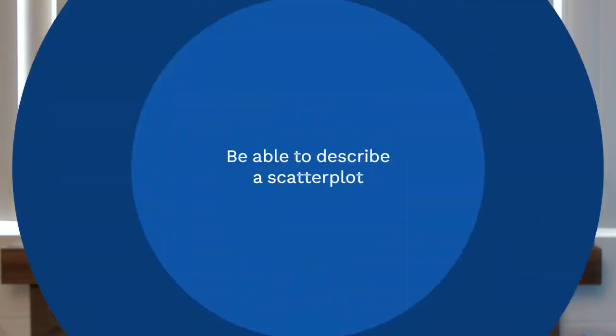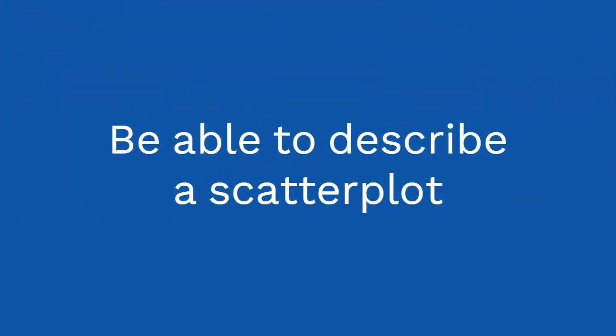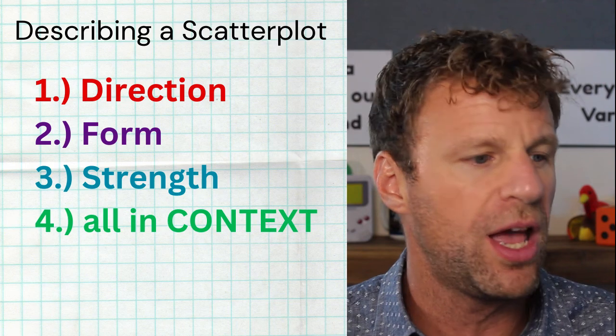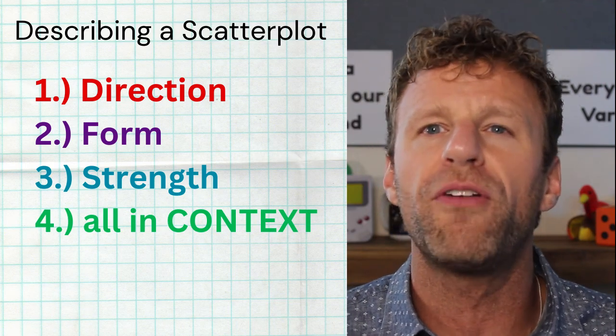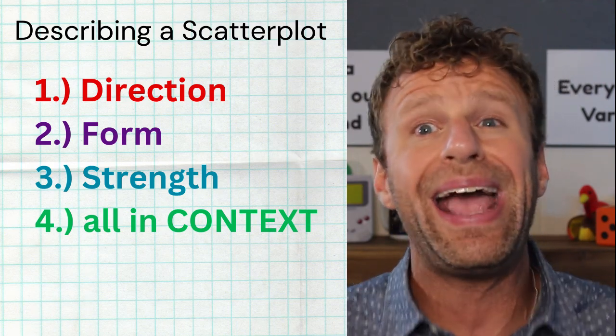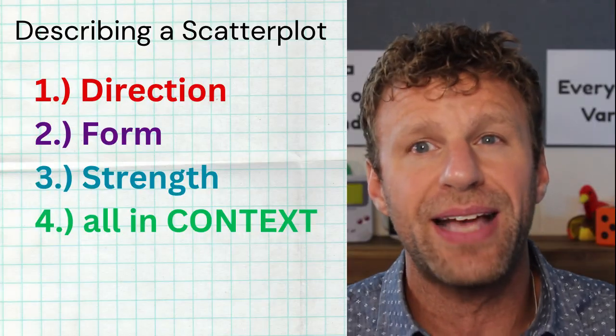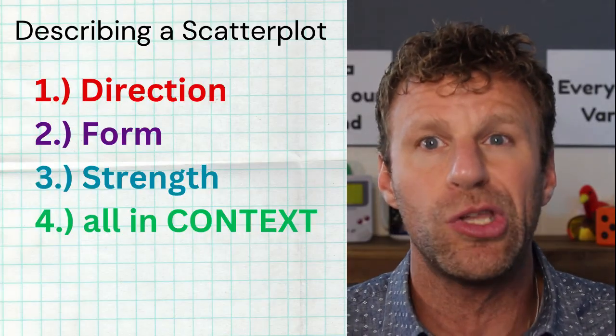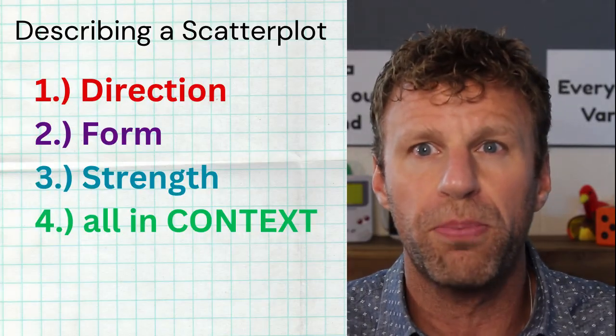Tip number three: you have to know how to describe a scatterplot. When you see a scatterplot, you're definitely going to be asked to describe what you see. There are four hugely important things you must mention: the direction of the scatterplot, the form, the strength, and you must talk about the scatterplot in context — meaning use words from the problem.